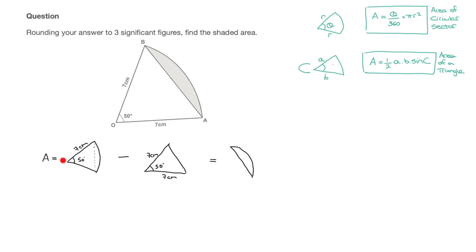Using these two formulas to calculate the area of the segment: this equals the area of the circular sector, which is 50 over 360 times pi times 7 squared, minus the area of the triangle, which is one half times 7 times 7 times sine of 50 degrees.